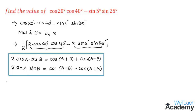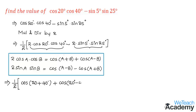Expanding the first term, we get (1/2) × [cos(20°+40°) + cos(20°−40°)], which gives cos 60° + cos(−20°). We are now finished with the first term.